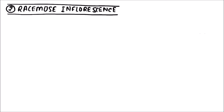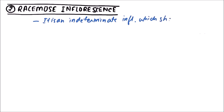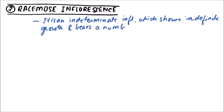Welcome to Studio Biology. In this video we are going to discuss the racemose inflorescence. It is an indeterminate inflorescence which shows indefinite growth and bears a number of flowers due to the presence of an active growing point.